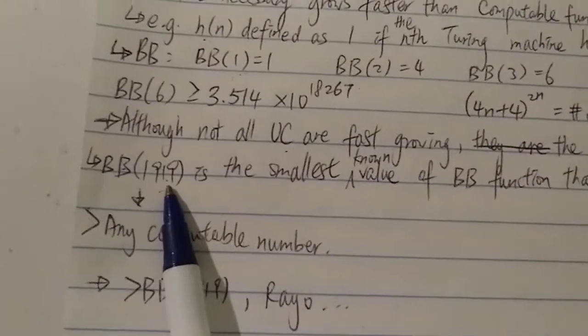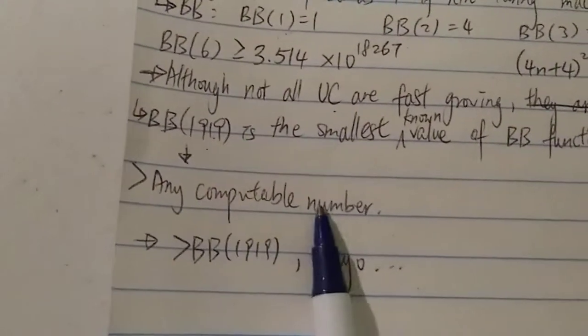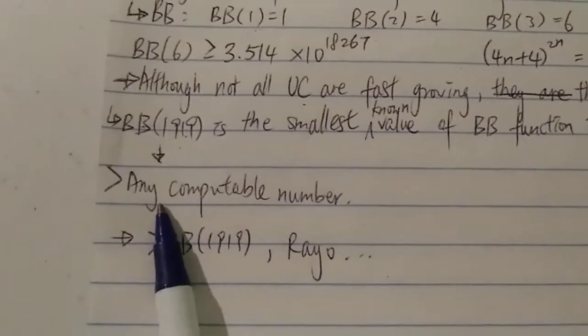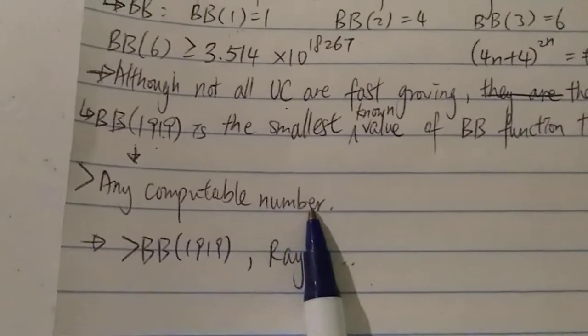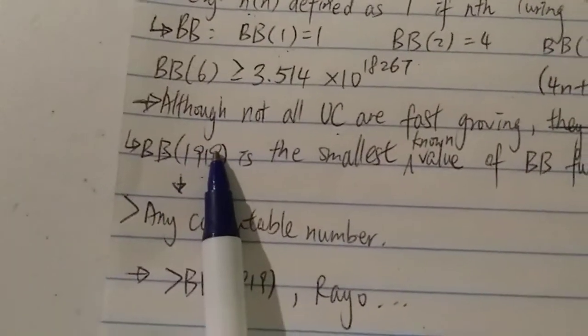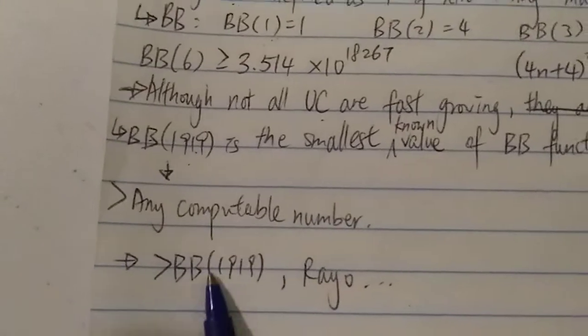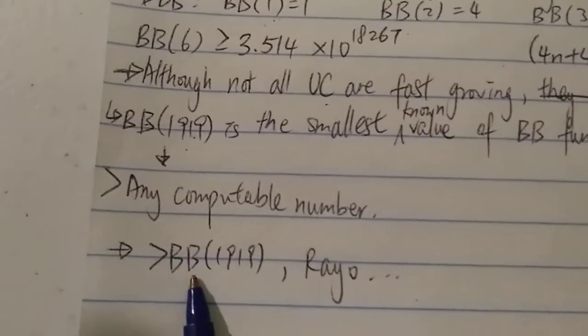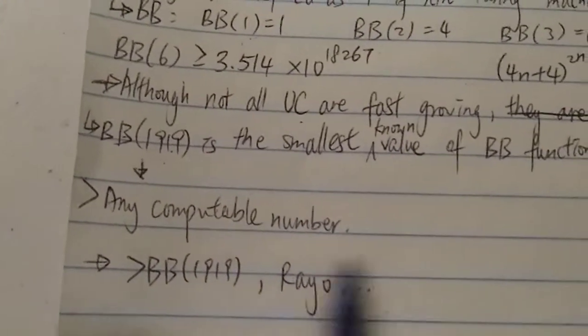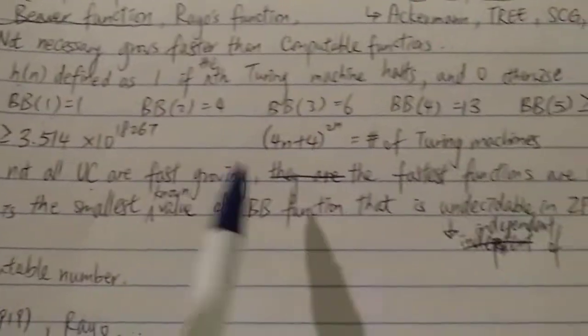Basically, in other words, it's bigger than any computable number. Because any computable number is provable, and since this is not provable, it's greater than any computable number. Same thing for any number that is bigger than BB(1919), and of course Rayo's number, which is obviously bigger than this one.